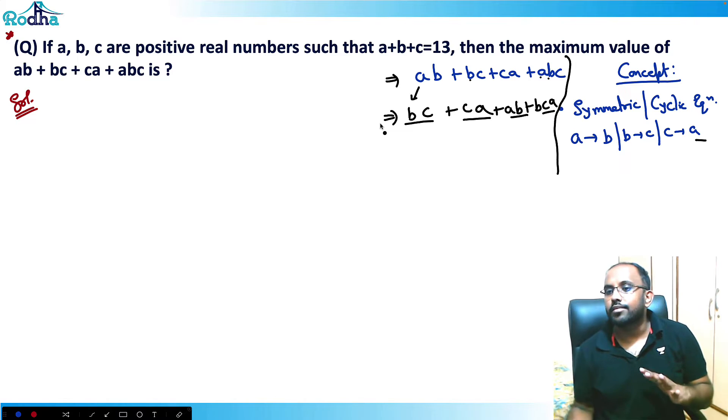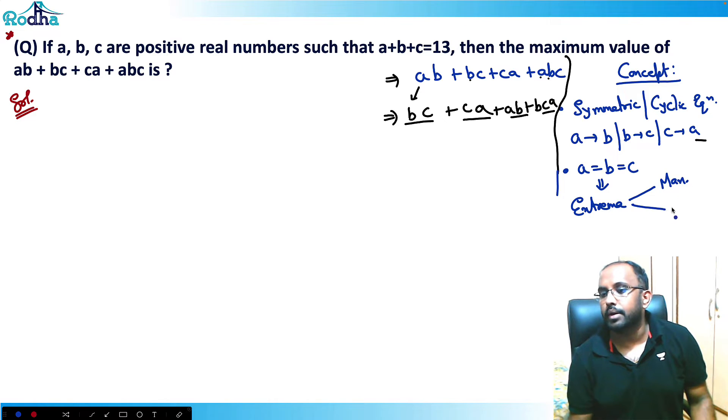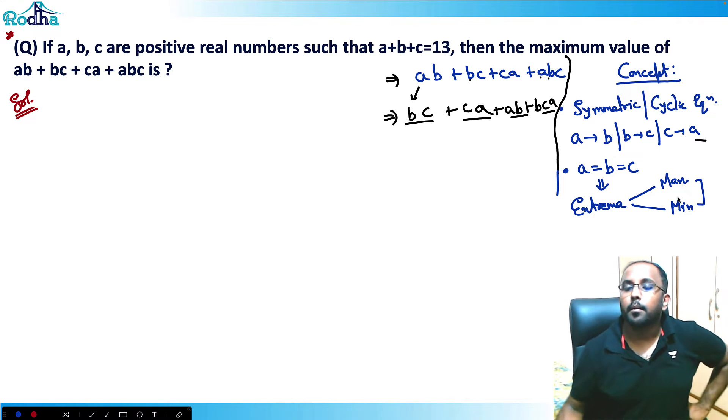This is called a symmetric or cyclic equation. So what happens in symmetric or cyclic equations? When I equate all the variables in any symmetric or cyclic equation, I will be getting extrema of that equation. Now extrema means it could be maxima or it could be minima. That I need to check as per the question.